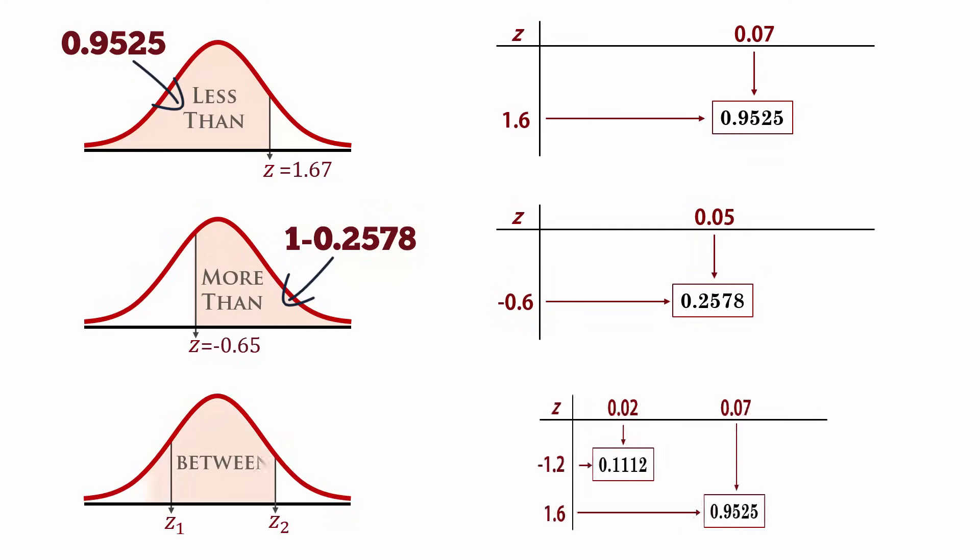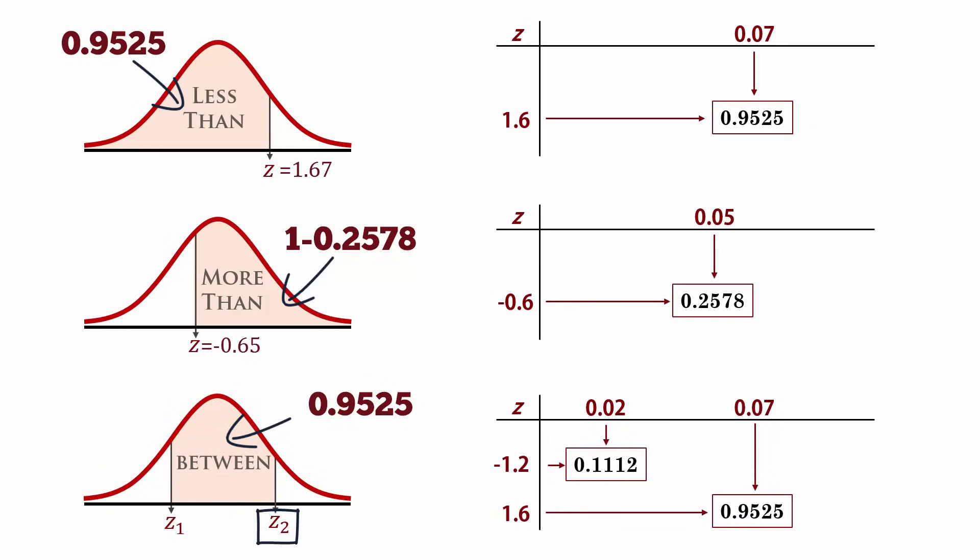And if you want the area between two z values, then do bigger area, which will correspond to the larger z value, minus the smaller area, which will correspond to the smaller z value.